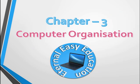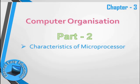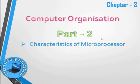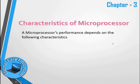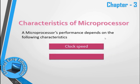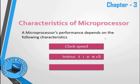Hello students, welcome to Eternal Easy Education. In this session you are going to learn Chapter 3: Computer Organization. The content of this video is characteristics of a microprocessor. A computer's performance depends on three characteristics.